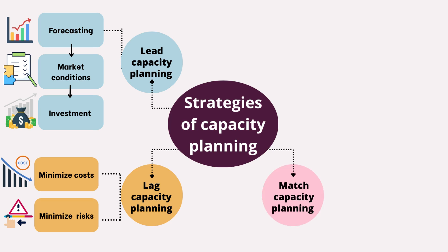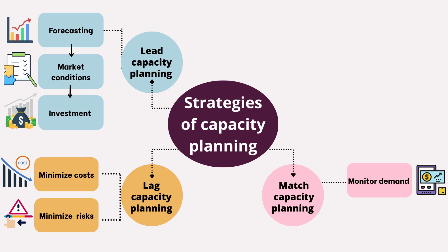Match capacity planning aims to balance resources and demand by closely aligning them in real time. Organizations monitor demand patterns and adjust their capacity accordingly, ensuring they neither under-utilize nor over-utilize their resources.